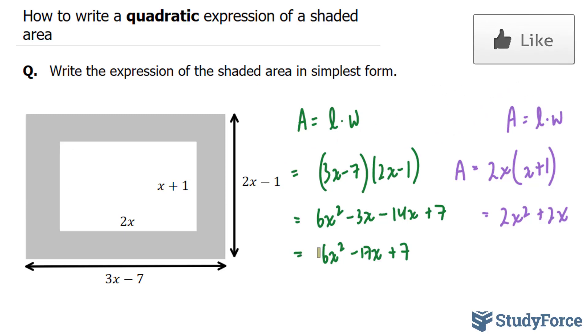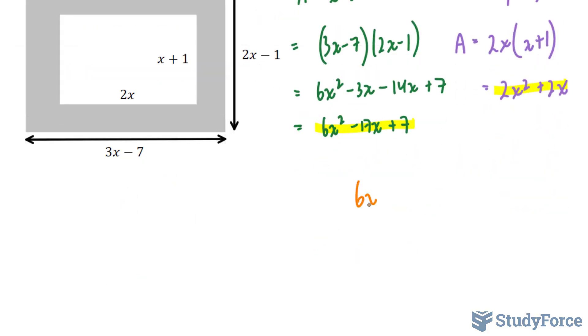What we will do now is subtract this from this. So 6x squared minus 17x plus 7 minus, and now notice I've introduced brackets, 2x squared plus 2x.